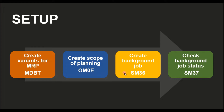In SM36 we create the background job and assign the variant created in the first step. We then schedule the background job based on the frequency needed for that plant. Once the job is created, scheduled, and released in SM36, the status can be checked in transaction SM37.